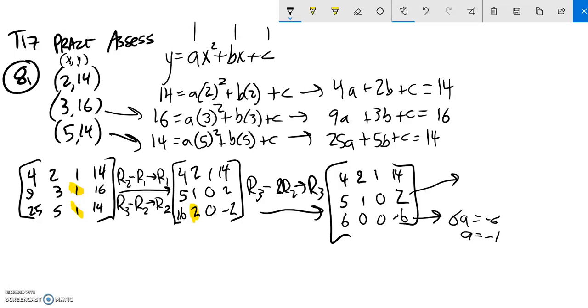So then from here, I can plug that into here and get this equation. Because I know that 5 times a is negative 1. So I have negative 5 plus B equals 2. Add 5, B is 7. So I've got A is negative 1 and B is 7.